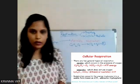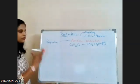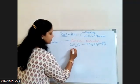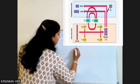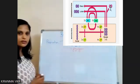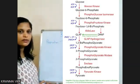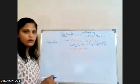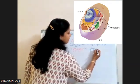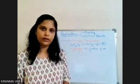In the process of aerobic respiration, it occurs in a series of steps. By utilizing oxygen, this glucose undergoes various steps. The first one is glycolysis, which occurs in a series of 10 steps. This glycolysis takes place in the cytoplasm of the cell.